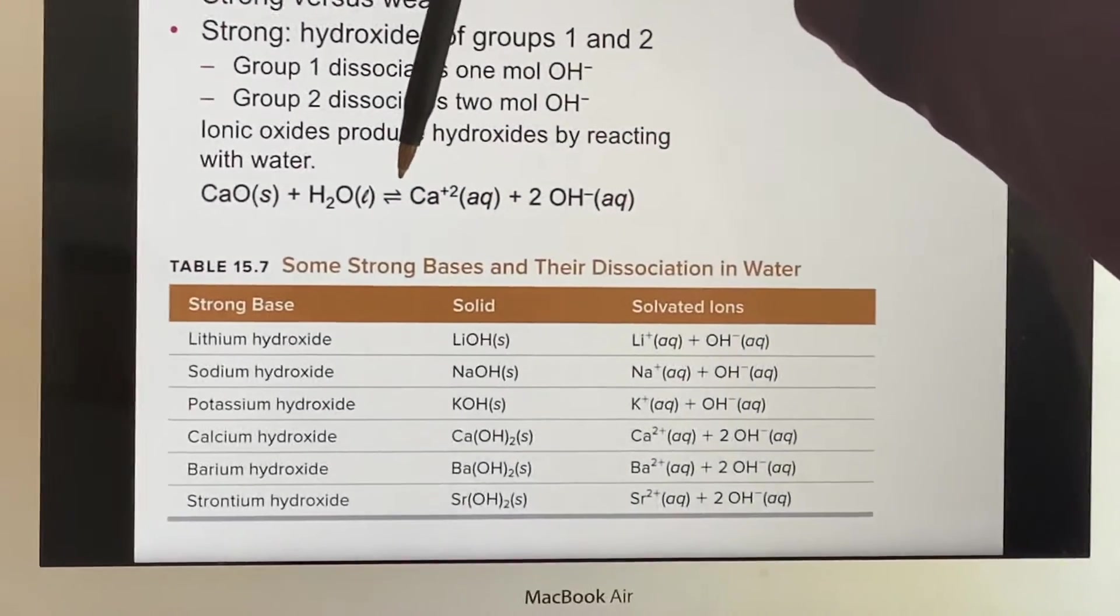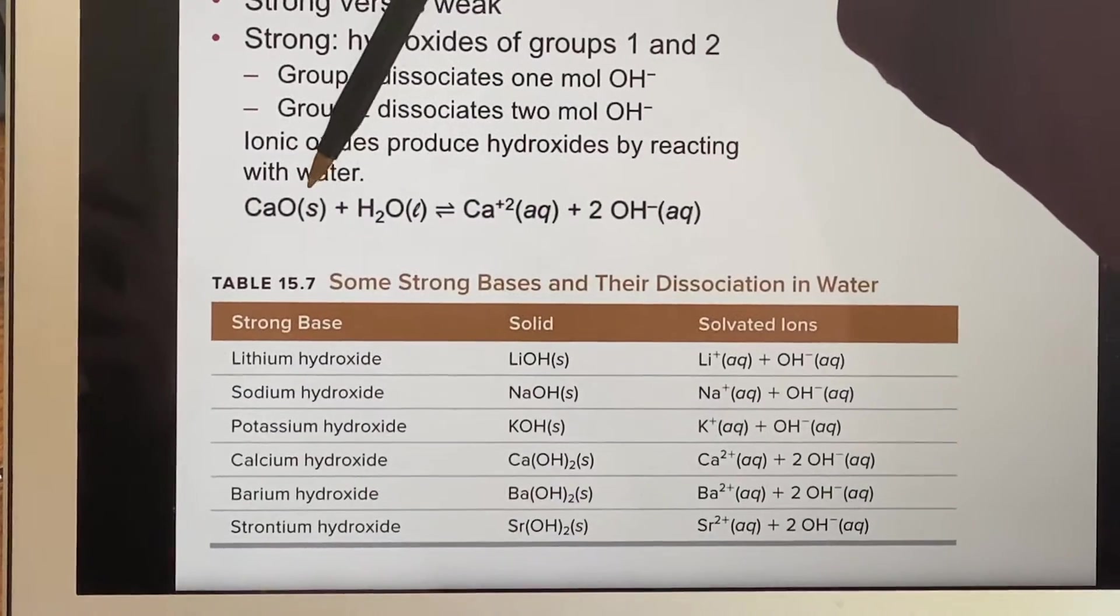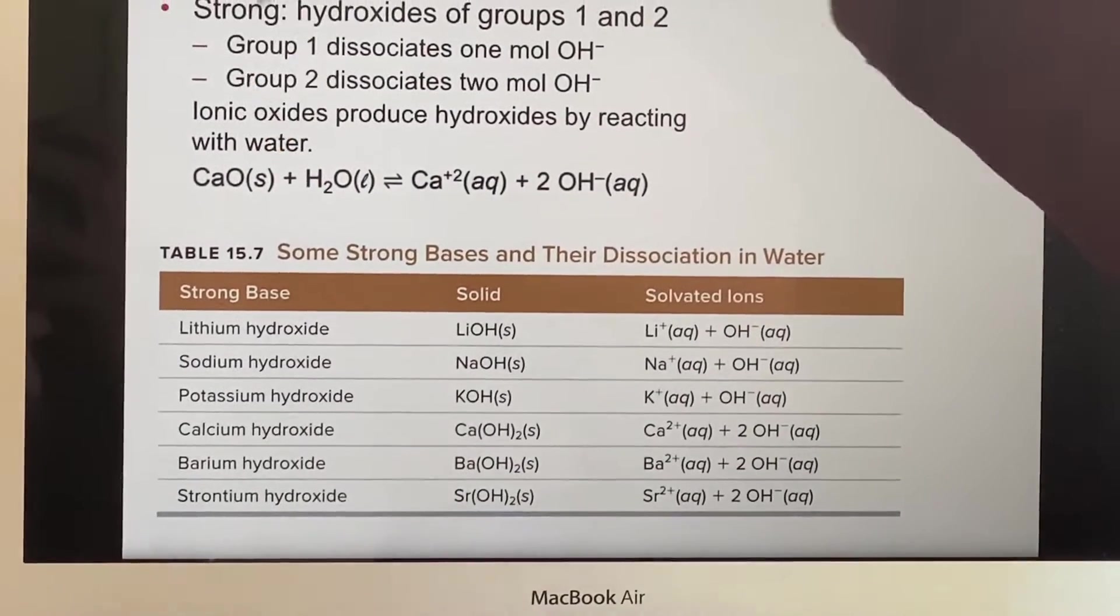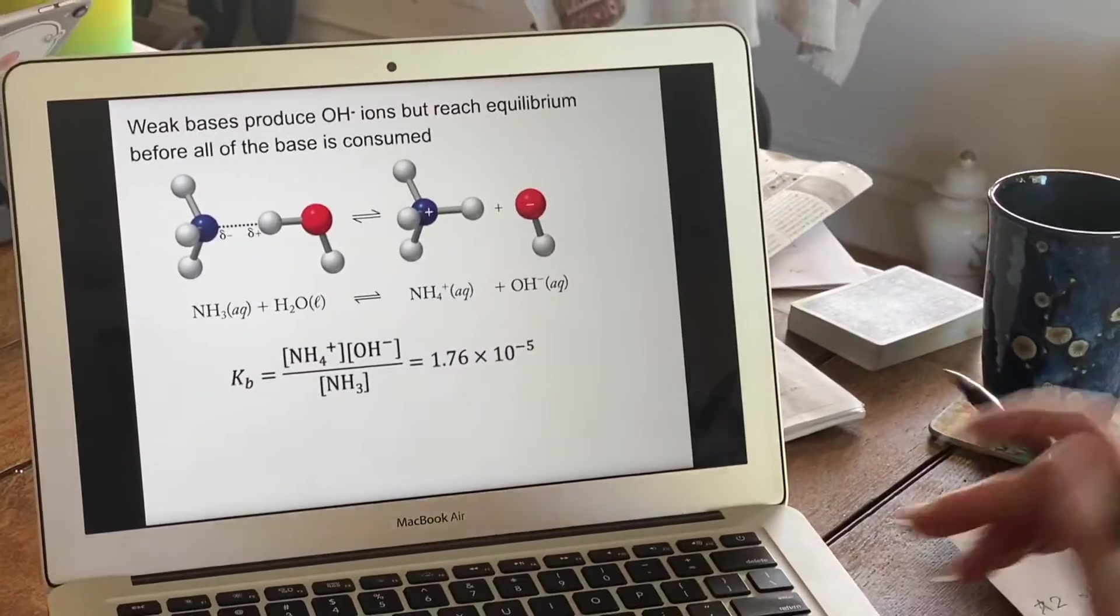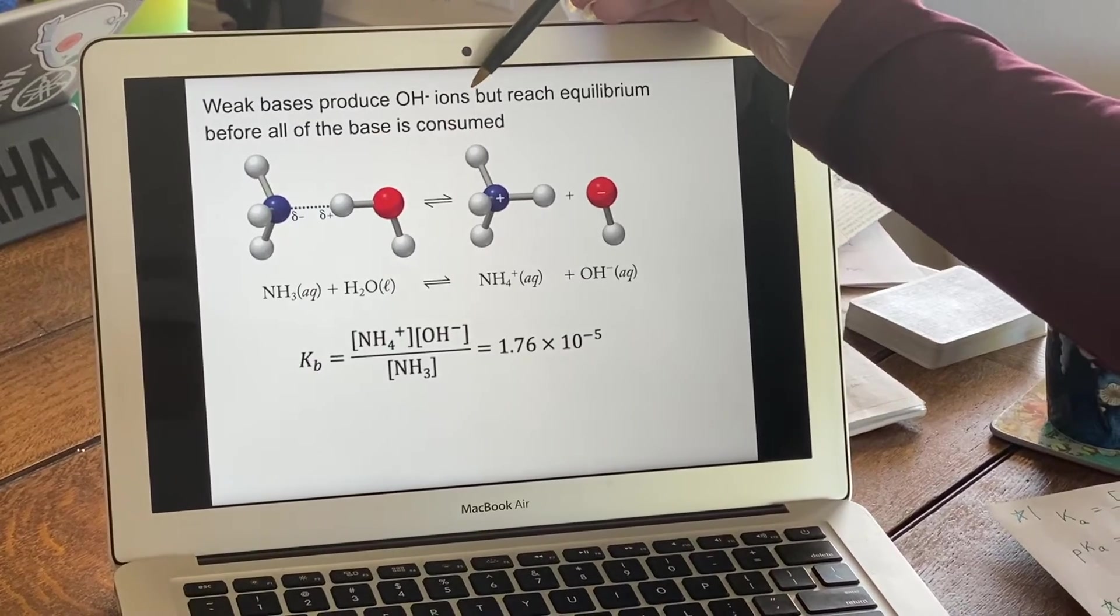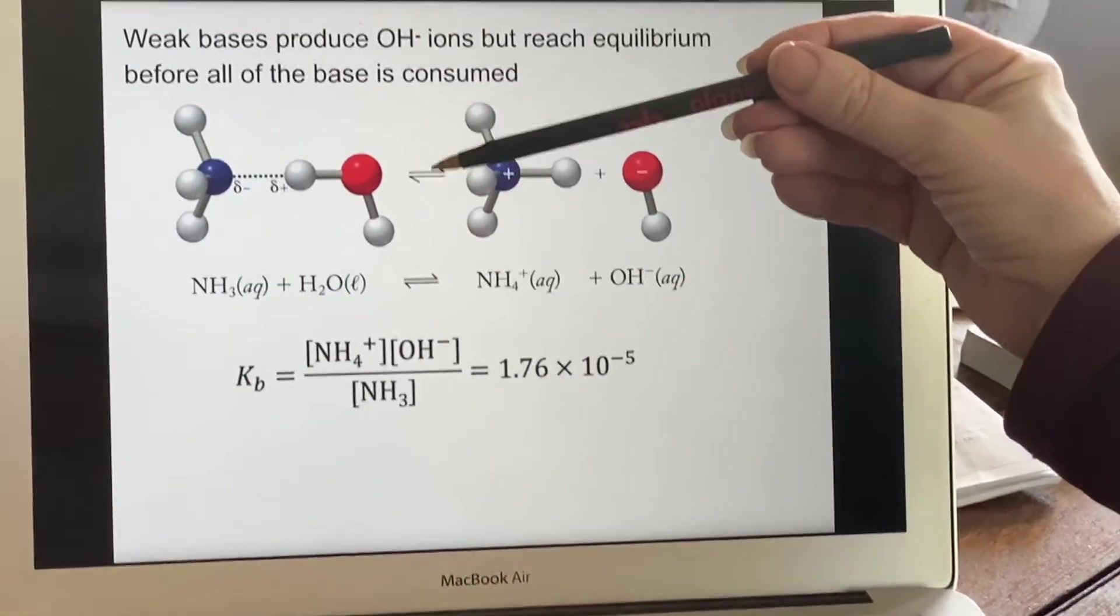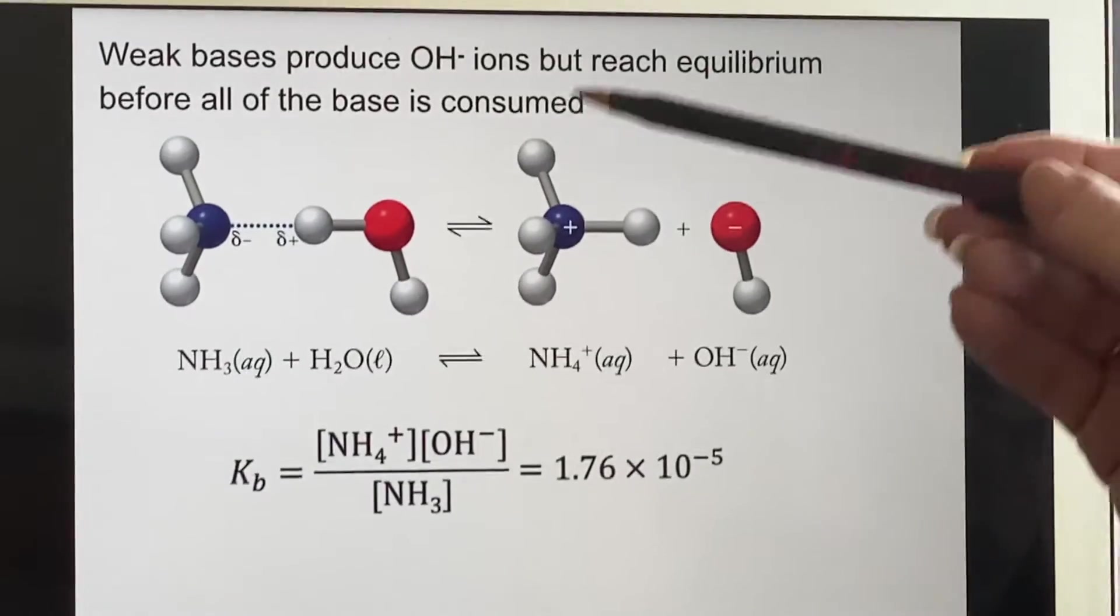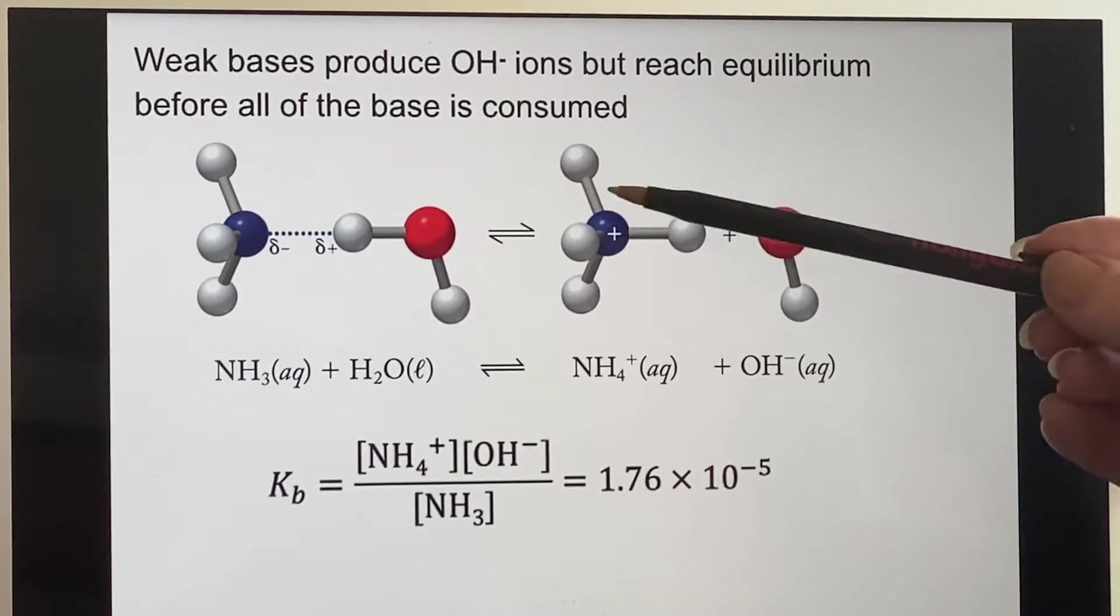You will notice, however, that this now says it's an equilibrium. So this might not be terribly soluble. Eventually, we'll talk about solubility as well. So the weak bases will produce hydroxide ions, but they're going to get to equilibrium before all of the base is consumed. They will form an equilibrium. They won't go to completion.